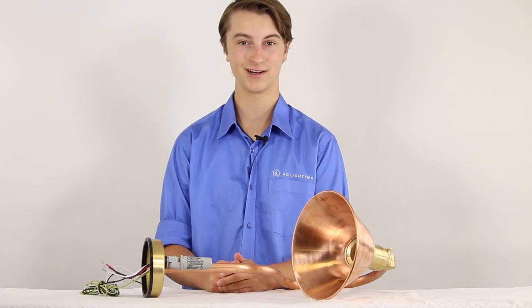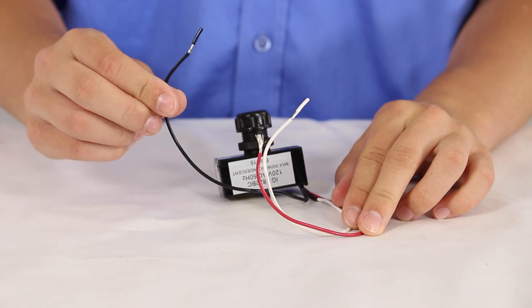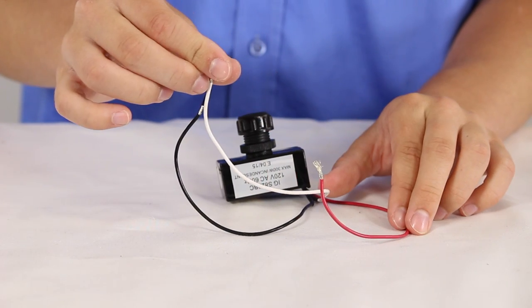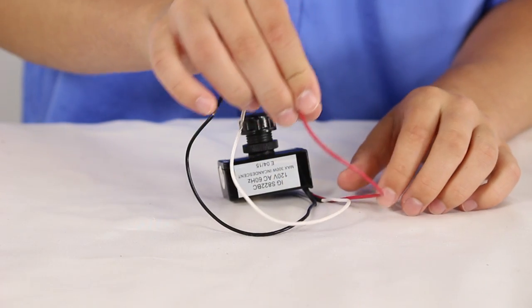All of these accessories wire the same way. The black wire is our power in wire, the white wire is our neutral, and the red wire is the switch leg.